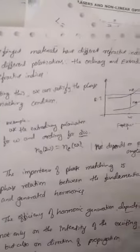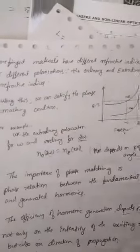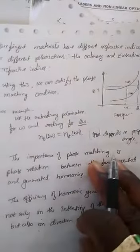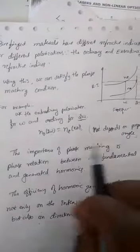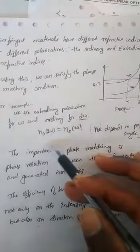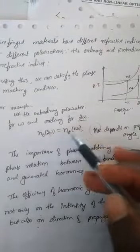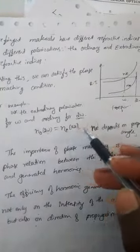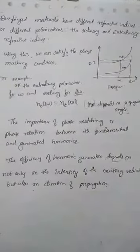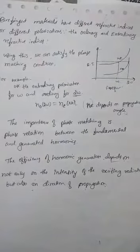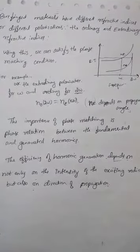As shown by birefringent materials, when a beam enters such a material we get two rays — the ordinary ray and the extraordinary ray — which have different refractive indices. The importance of phase matching is the phase relation between the fundamental and the generated harmonics.